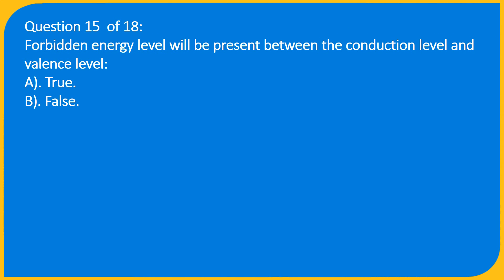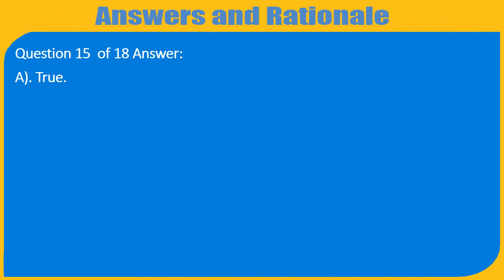Question 15 of 18: Forbidden energy level will be present between the conduction level and valence level. A. True. Question 15 of 18, A. True.